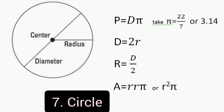Number 7: Circle. Circle is a plane figure bounded by one curved line, such that all straight lines drawn from a certain point within it to the bounding line are equal. Perimeter of circle is equal to diameter times pi. Remember that pi is equal to 22 over 7 or 3.14.